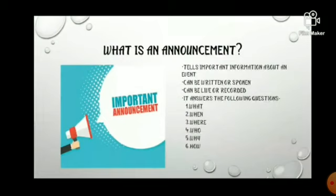An announcement answers certain questions. Those are: What? What is the event? When? When is the event — that is the time and date. Where? Where is the event — that is the place where it is organized. Who? Who has organized the event — for example, the name of the organization.